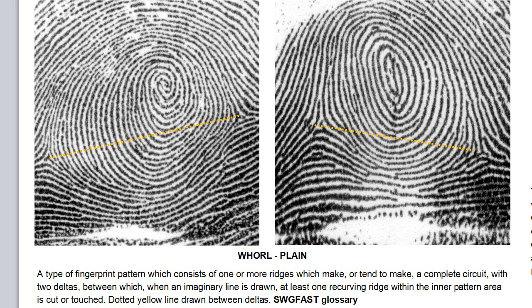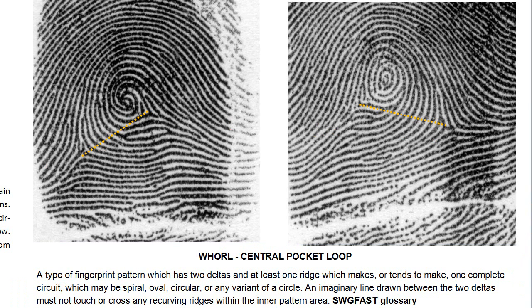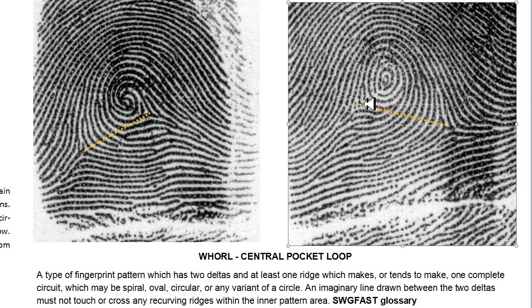You will not have to determine if it's a plain whirl or not in your inquiries and quizzes — you're just going to try to determine if it is a whirl. Here's an example where I have drawn the line between the two deltas. Because this curving ridge right here does not cross, it is a central pocket loop whirl and not a plain whirl. Notice that this curving circuit is not passing across the yellow line, which means it is a central pocket loop whirl.